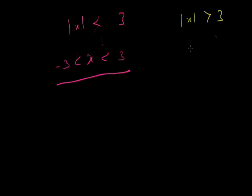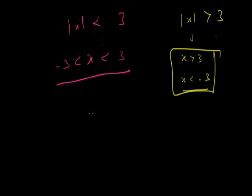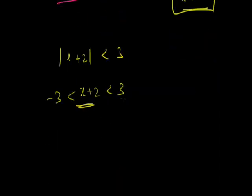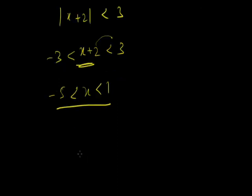If mod x is greater than 3, the solution is x is greater than 3 or x is less than minus 3. Now for mod of x plus 2 less than 3: it opens as x plus 2 is less than 3 and x plus 2 is greater than minus 3. Solving: x is less than 1 and x is greater than minus 5. So x is between minus 5 and 1. We write the solution as x belongs to the open interval (minus 5, 1), meaning minus 5 and 1 are not included.